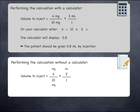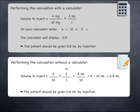To perform the calculation without a calculator, you can start by cancelling the units of milligrams on the top and bottom, which leaves a final unit of mils. Now simply multiply across: 4 times 2 gives 8, and the units of mils remain, and 10 times 1 gives 10. 8 over 10 is 8 divided by 10, which is 0.8. Therefore, 0.8 mils should be injected. This answer is in line with the estimation made earlier.